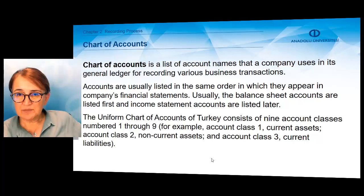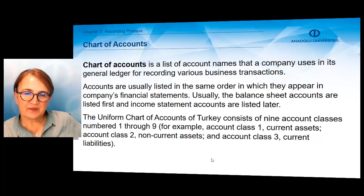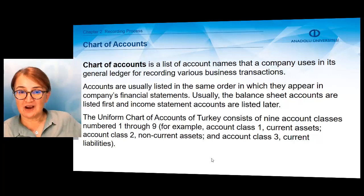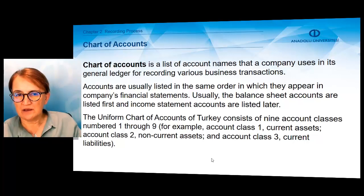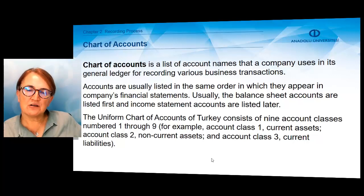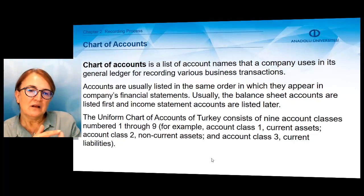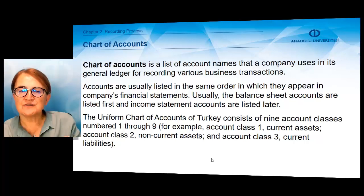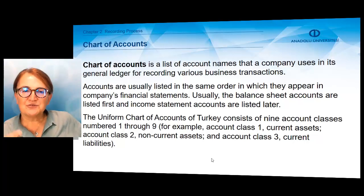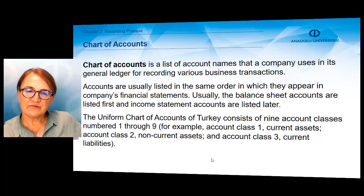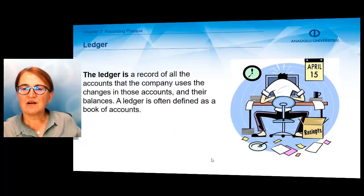In Turkey, we have a uniform chart of accounts, which means all companies must use the same chart of accounts. The titles of the accounts are the same for each company. This uniform chart of accounts of Turkey consists of nine account classes, numbered one through nine. For example, one is related to current assets, two to non-current assets, and three to current liabilities. During this course we will not use these numbers, but you have to be familiar with the uniform chart of accounts used in Turkey.